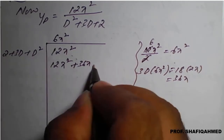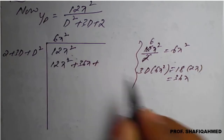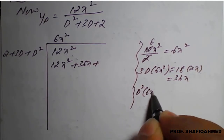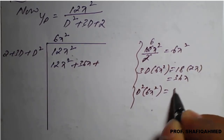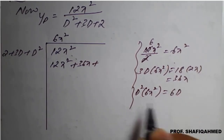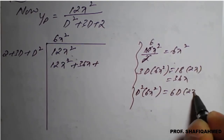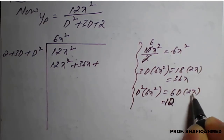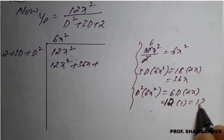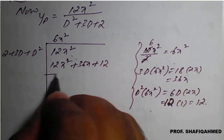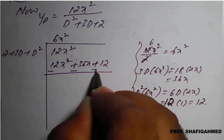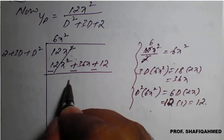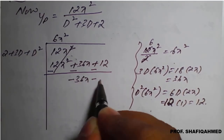Then, d-square of 6x square: differentiating x square gives 2x, and differentiating again gives 12. So write 12. Close the bracket and change the sign: minus minus gives plus. So 12x square minus 12x square cancels, and we are left with minus 36x minus 12 as the remainder.